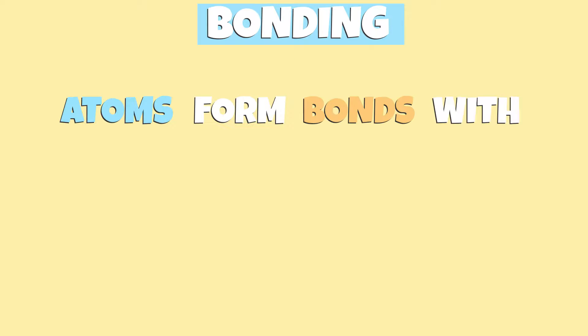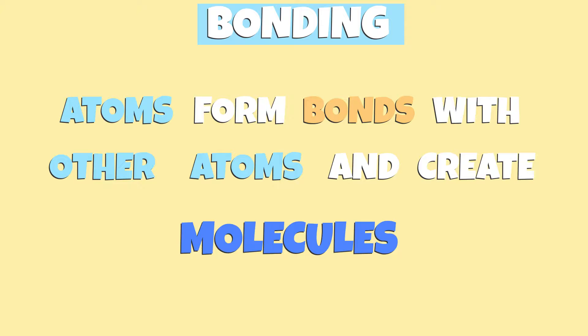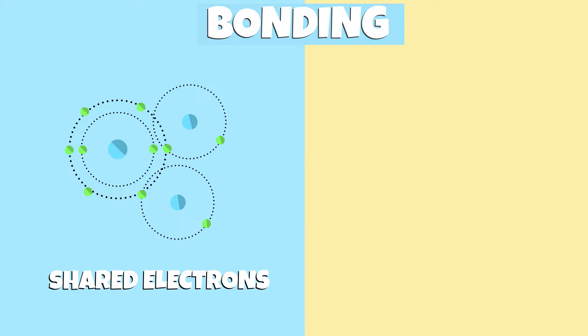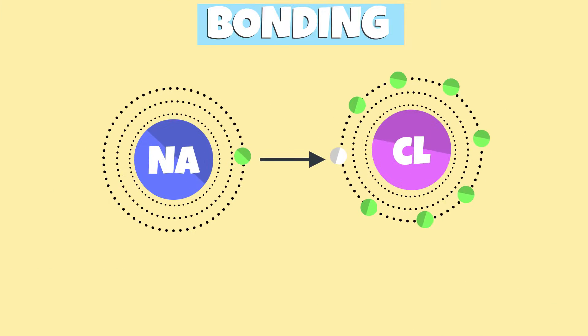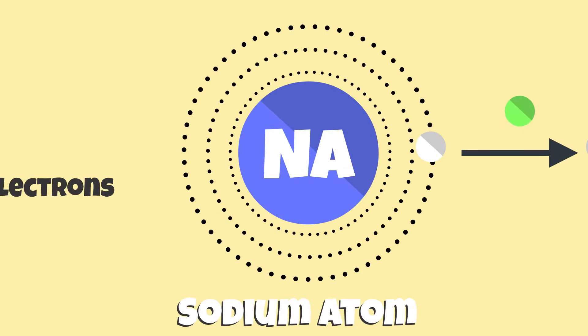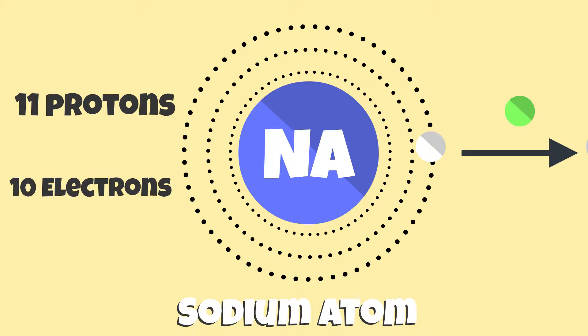Atoms form bonds with other atoms and create molecules. They do this by sharing, taking, or giving electrons. If an atom gives an electron, it will have fewer electrons than the total number of protons, so it becomes a positive ion, and the atom has a positive charge.